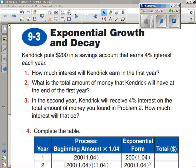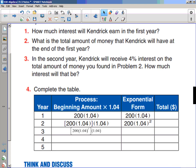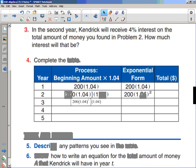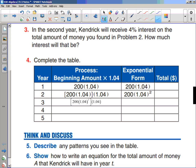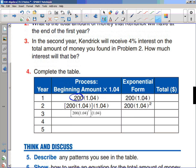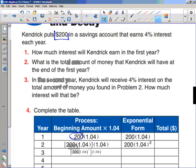So let's look at this first thing on our notes. It says, Kendrick puts $200 in a savings account that earns 4% interest each year. How much interest will Kendrick earn in the first year? So if we look down at this table, it's given us a formula. Now I want to make sure that we understand where this formula is coming from.